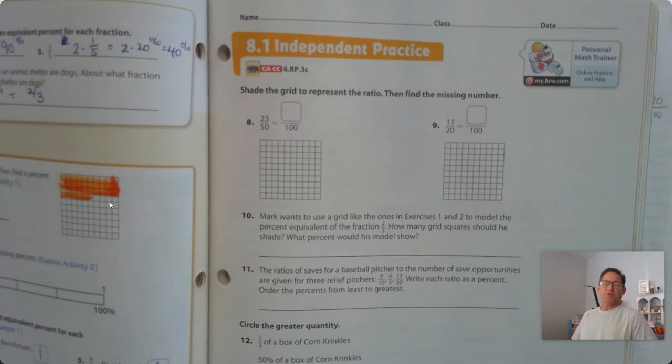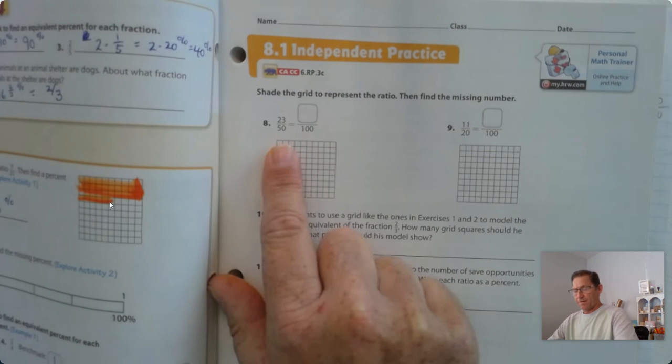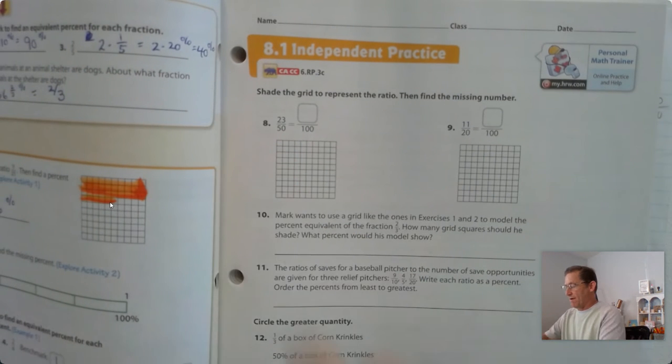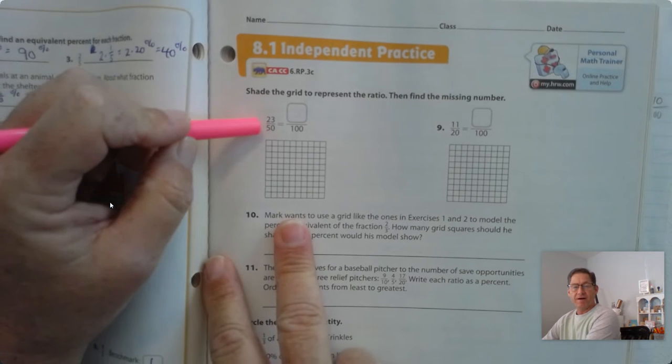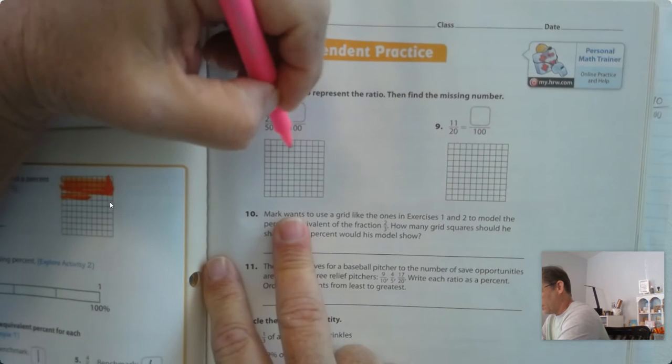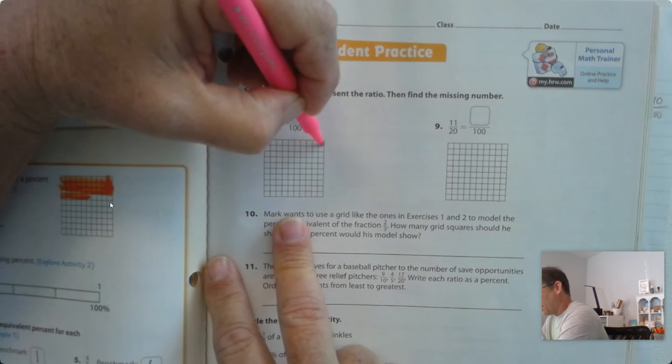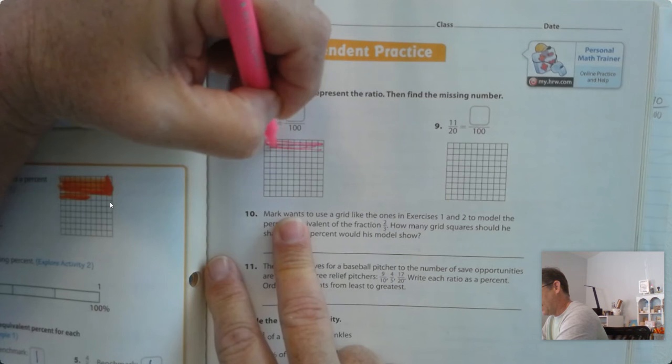Number 8. Shade the grid to represent the ratio, then find the missing number. We have 23 for every 50, right? Okay, so if you double the 23, we would have 46.